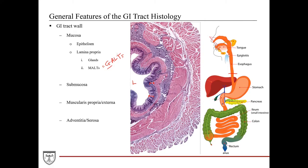In the respiratory tract, the MALT associated with bronchi or bronchioles is typically called the BALT. The mucosa in the GI tract wall has one more important component: the muscularis mucosa. This is a thinner muscular layer typically comprised of smooth muscles. The contraction of the muscularis mucosa allows somewhat independent movement of the mucosa from the rest of the thick GI tract wall. So this three-layered composition of the mucosa — the innermost epithelium, lamina propria, and muscularis mucosa — is a fairly unique feature of the GI tract.